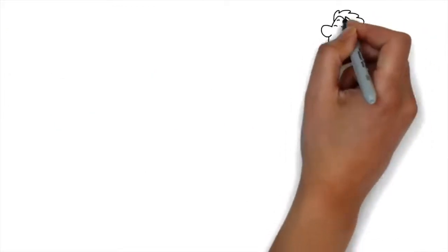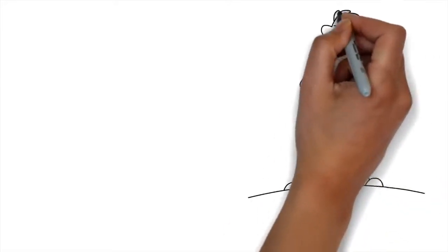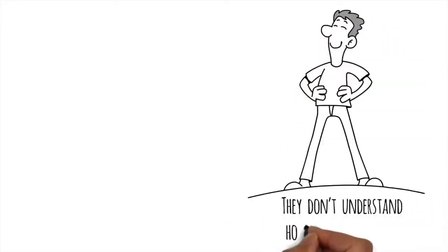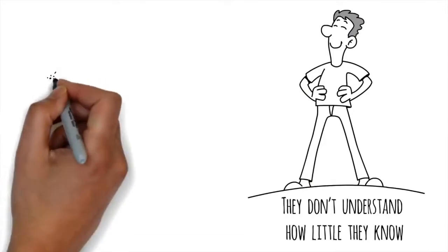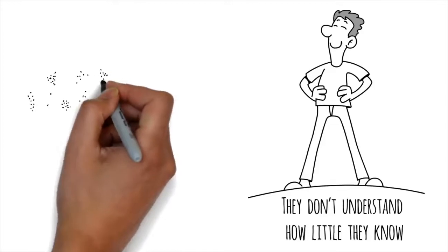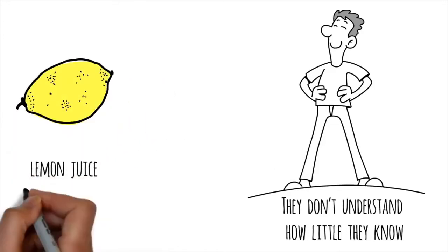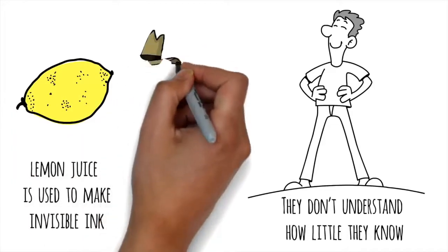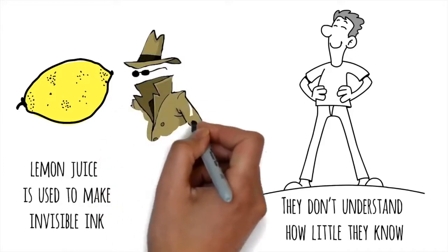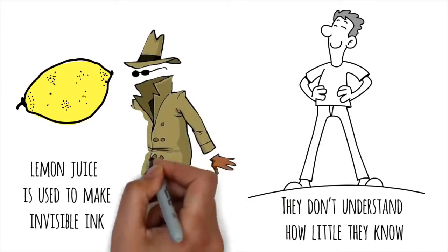This is why people with low intelligence often rate themselves so highly. They don't understand how little they know. Just look at the man who inspired Dunning and Kruger's original experiment. He decided to put lemon juice on his face in order to rob banks. Since lemon juice is used to make invisible ink, he believed he was completely invisible to the bank's cameras.